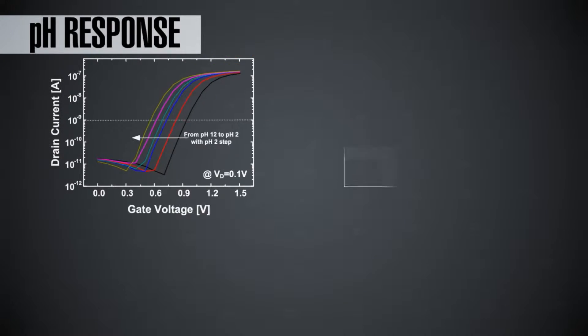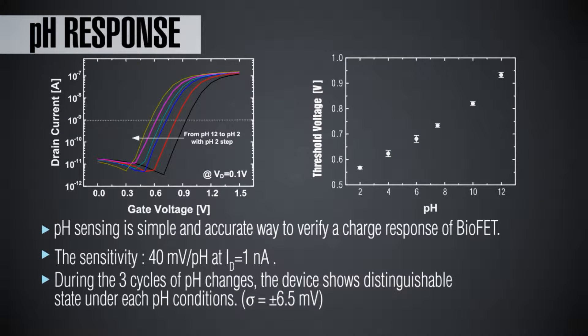The first set of results I show is pH sensing. pH sensing is important because pH varies when your health conditions change, so it is a simple and accurate way to verify the charge response of the BioFET itself. What I'm showing here is the drain current versus the gate voltage when the pH conditions change. The sensitivity of this particular device is 40 millivolts per pH, which is a typical value when using silicon dioxide as a gate material. Using other oxides like aluminum oxide or hafnium oxide can improve this number beyond 40 millivolts per pH.